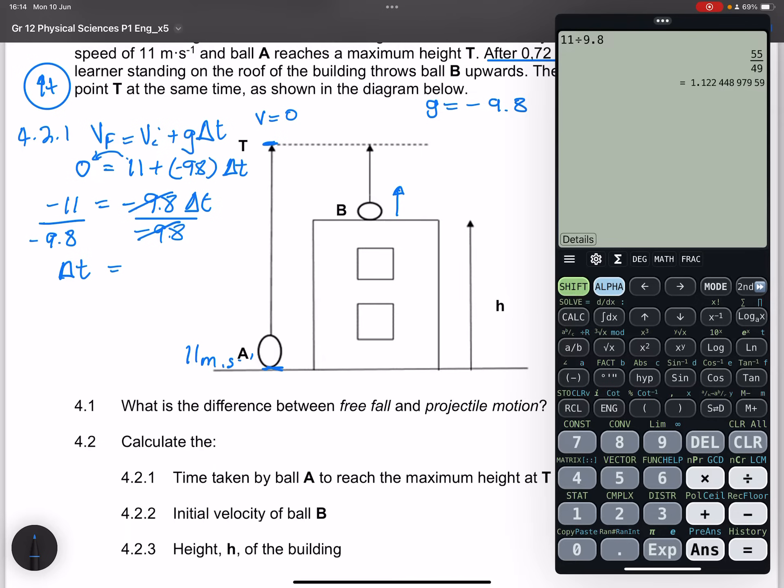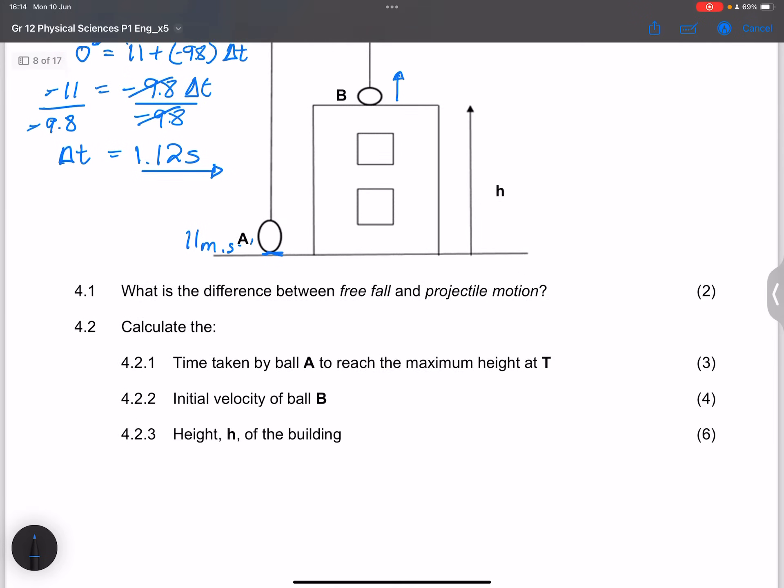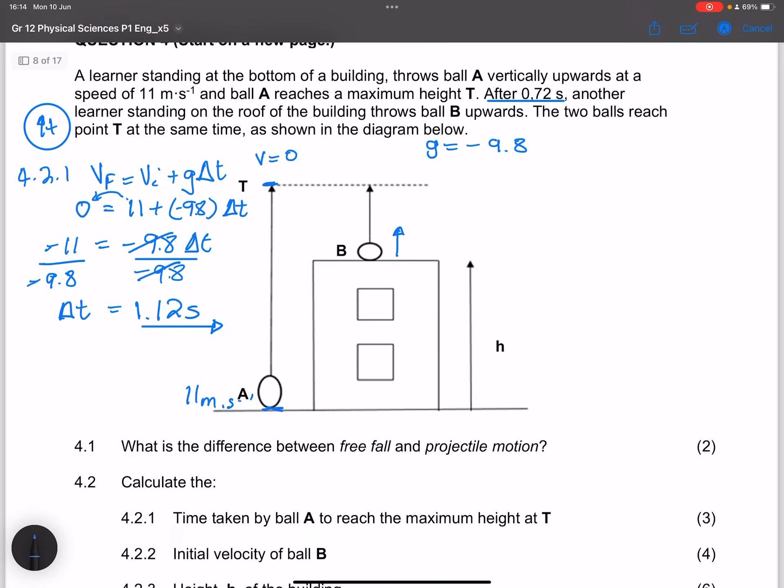So that's 11 divided by 9.8. Remember, in this case, the negative divided by negative would give us a positive. So that's 1.12 seconds. So the time that ball A takes to get to the maximum height is 1.12 seconds.